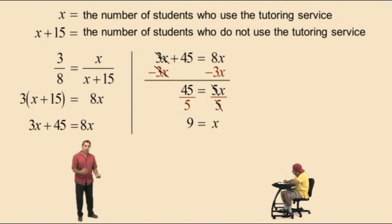Now, if x equals 9, that represents the number of students who use the service and remember there was 15 more who do not, therefore we get x plus 15 equals 24, which represents the number of students who do not use the tutoring service. So let's go ahead and summarize our answer.